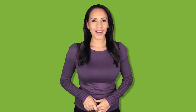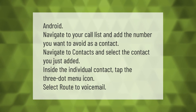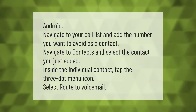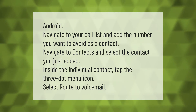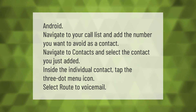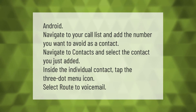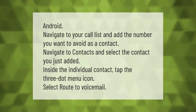On Android, navigate to your call list and add the number you want to avoid as a contact. Navigate to Contacts and select the contact you just added. Inside the individual contact, tap the three-dot menu icon and select 'Route to Voicemail'.